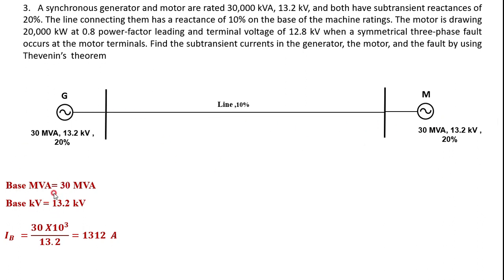Based on the base quantities of MVA and kV, I am calculating the base current IB so that I can convert per-unit current into actual current in amperes. The base current IB is calculated as 1312 amperes. Since the machine ratings and base quantities are the same, the new per-unit reactance of the generator, line, and motor remains the same.